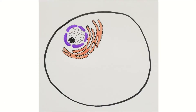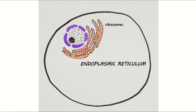Next, we find that there is a big network of passages made of membrane. This is called the endoplasmic reticulum. The little dots on the surface are ribosomes. These ribosomes are busy making proteins, and the endoplasmic reticulum helps to fold these proteins up and transport them around the cell. Because the endoplasmic reticulum has ribosomes on the surface, we call it rough endoplasmic reticulum, or RER for short.